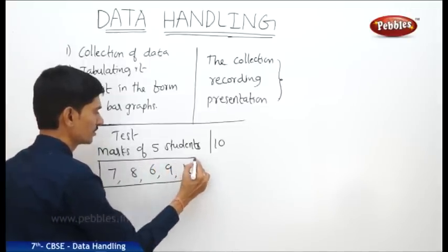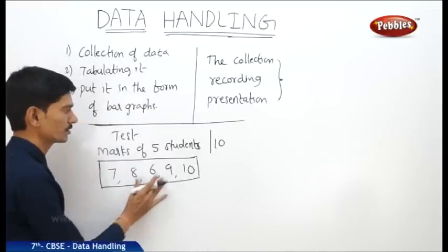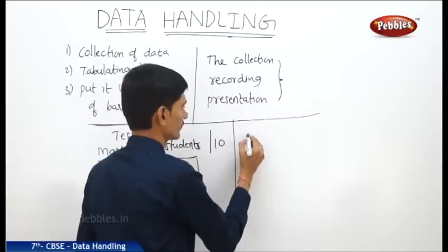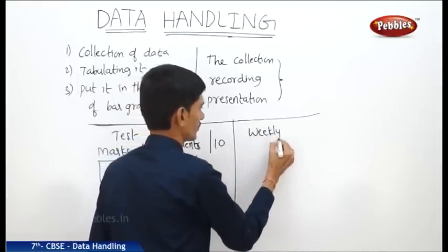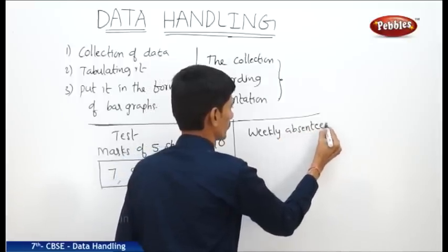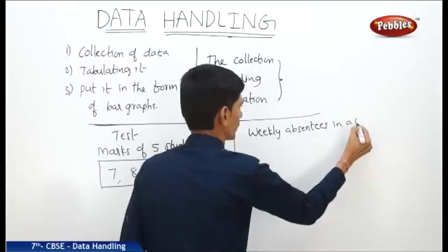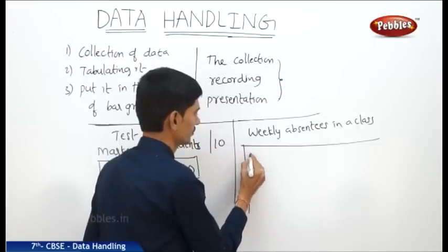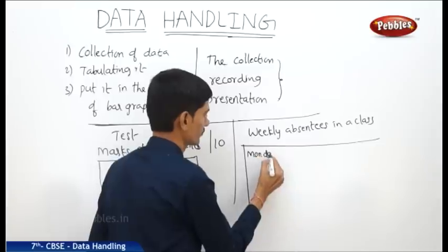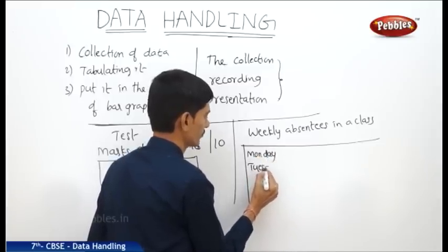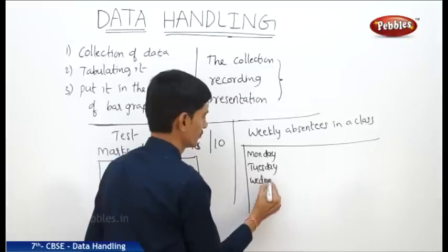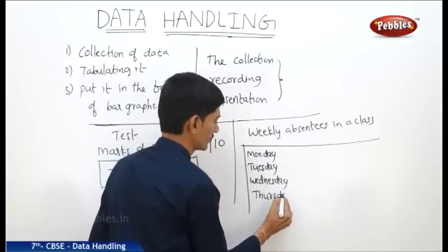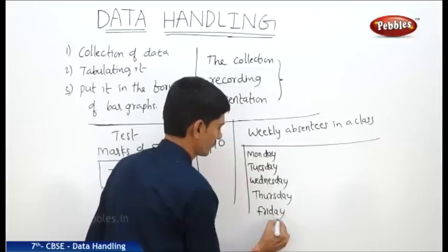So this data represents the marks of 5 students in a particular test out of 10. Now let us take another data, that is weekly absentees in a class. Now in this, first we will take day-wise. So first we will take Monday, then Tuesday, then Wednesday, Thursday, Friday, then Saturday.